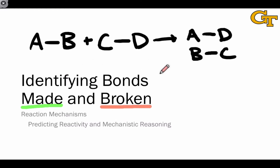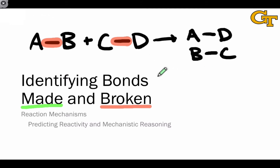In this hypothetical general example, we can see that the linkages connecting A and B, and C and D, are both broken in the course of this reaction, since A and B are no longer linked to each other and C and D are no longer linked to each other. At the same time, the reaction has established new bonds between A and D, and B and C. We'll see in this video that identifying bonds made and broken gives us great insight into the reaction type — the class of reaction that's occurring.